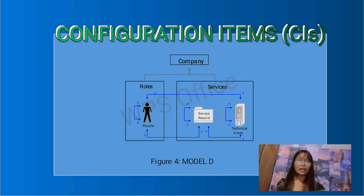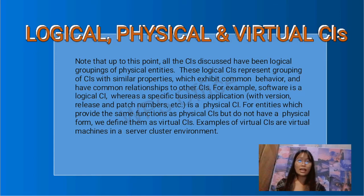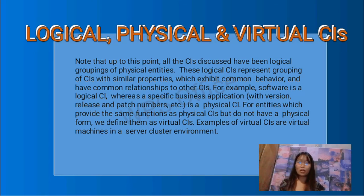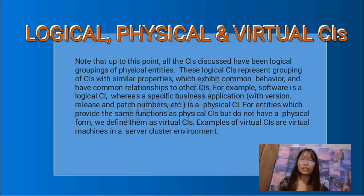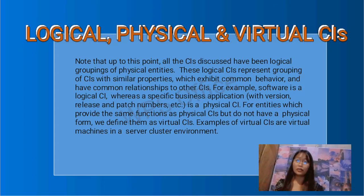Configuration items have company, role, and release relationships — Figure 4, Model B — with Logical, Physical, and Virtual types. Note that at this point all CIs can be logical groupings of physical entities. A logical CI represents a grouping of CIs with similar properties which exhibit common behavior and have common relationships to others. For example, software is a logical CI, whereas a specific business application with a version, release, and patch number is a physical CI. For entities which provide the same function as a physical CI but do not have a physical form, we define them as a virtual CI. An example of a virtual CI is a virtual machine in a server cluster environment.